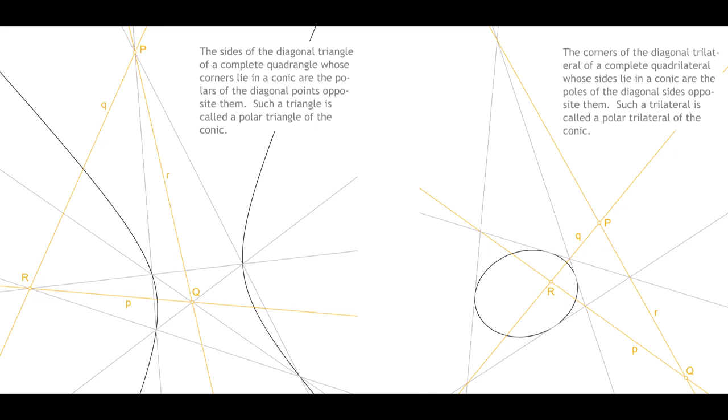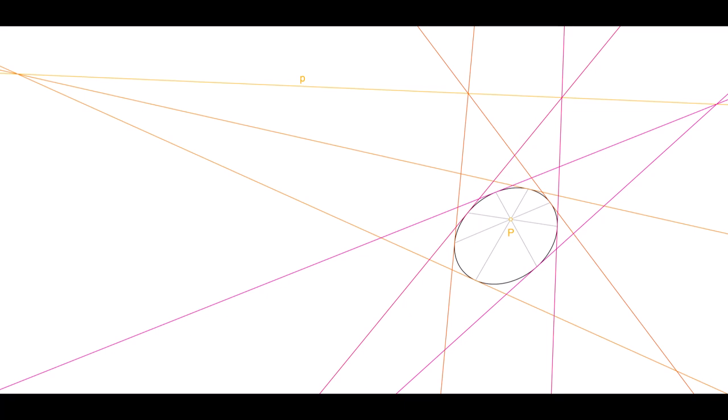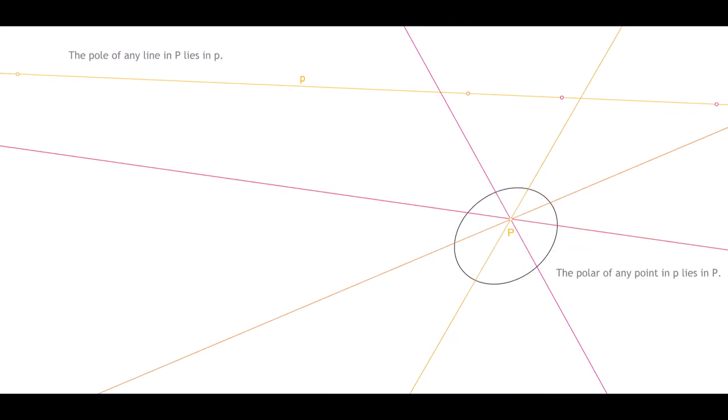Note that this way of constructing a pole and its polar actually gives you three. Now think the construction in movement — it always associates the same pole and polar, but the polar triangle, shown here in yellow, shifts. And with it, so do the tangents. It follows that the tangents whose tangent points align with the pole intersect in the polar. And tangent points whose tangents intersect in the polar align with the polar. And that leads to the fundamental theorem of pole and polar: the pole of any line in a pole lies in the polar.